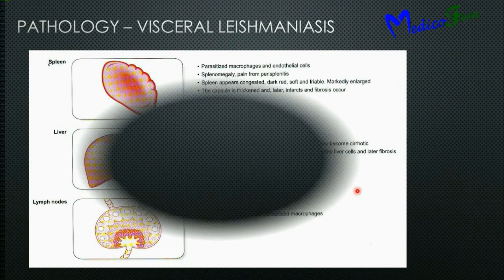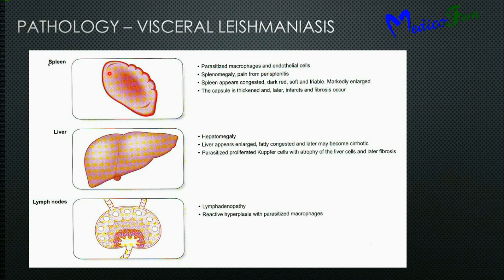Pathology of visceral leishmaniasis: Leishmania affects mainly the spleen, liver, and lymph nodes. In the spleen, there is parasitized macrophage and epithelial cell deposition, causing splenomegaly and pain due to perisplenitis. The spleen appears congested, dark, soft, and friable with marked enlargement and thickened capsule. In chronic states, infarction and fibrosis of the spleen also occur. In the liver, there is hepatomegaly, fatty degeneration, and possible cirrhosis on prolonged infection. Parasitized Kupffer cells proliferate and there is atrophy of liver cells, followed by fibrosis. In lymph nodes, there is lymphadenopathy and reactive hyperplasia of parasitized macrophages.